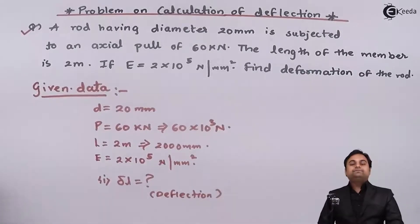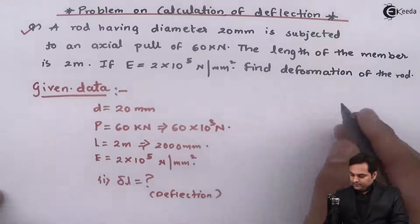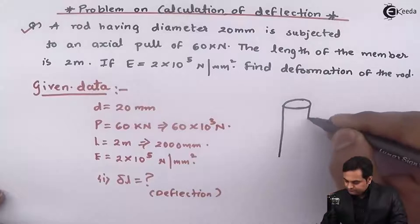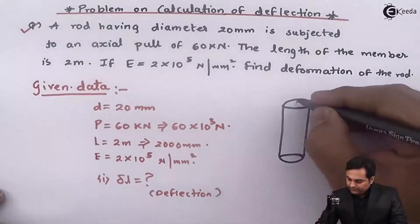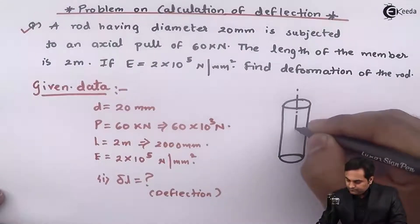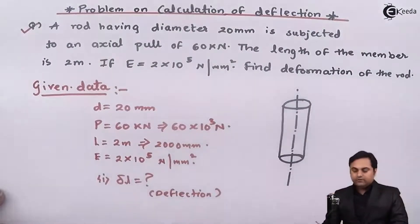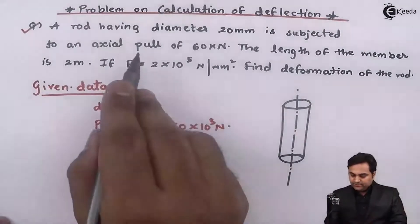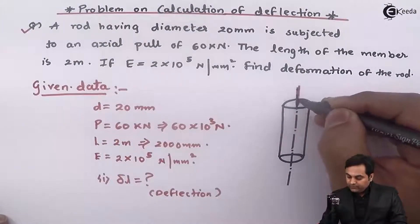Now in this question first I'll draw the diagram. Here we have a rod. This is the axis of the rod. Next it is subjected to axial pull of 60 kilonewton, so this rod is being pulled.